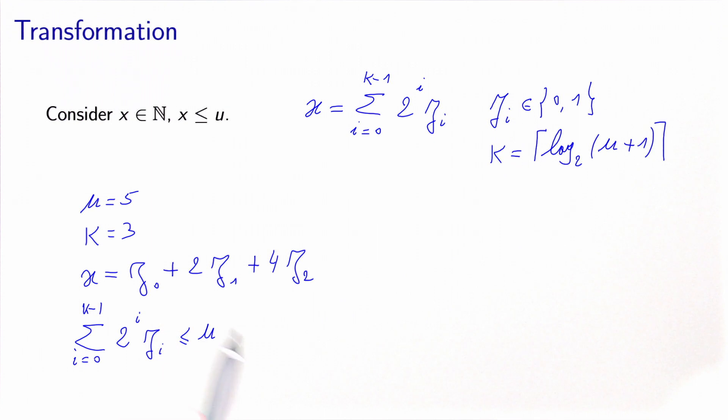And the reason why we need to add the last constraint is that if all the z's are 1, we get a value of x which is 7. And this is beyond the upper bound. So we need to impose this constraint to make sure that x does not take any value larger than 5.